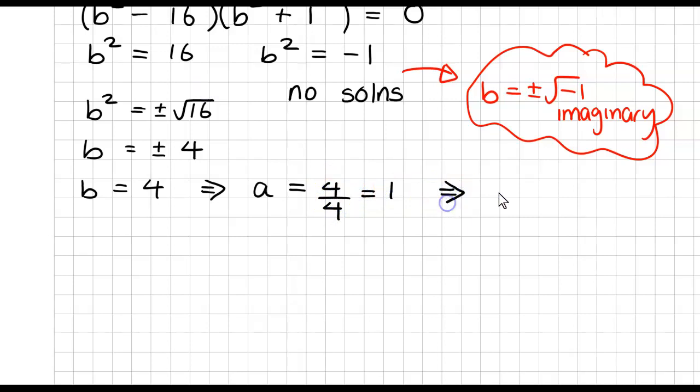So that will give us the complex number 1 plus 4i. If B is equal to negative 4, this implies that A is equal to 4 divided by negative 4, which is equal to negative 1. So this implies then that A is equal to negative 1 plus 4i. So there's both my solutions.